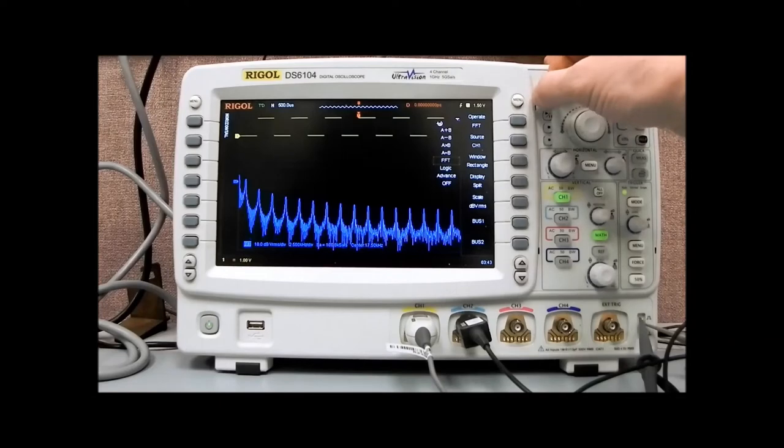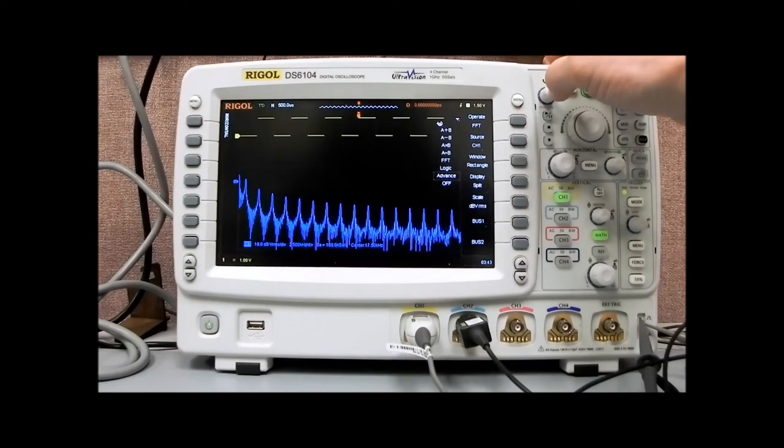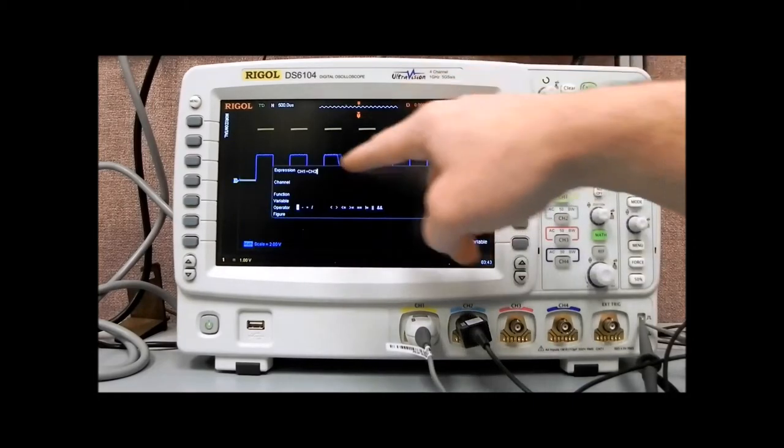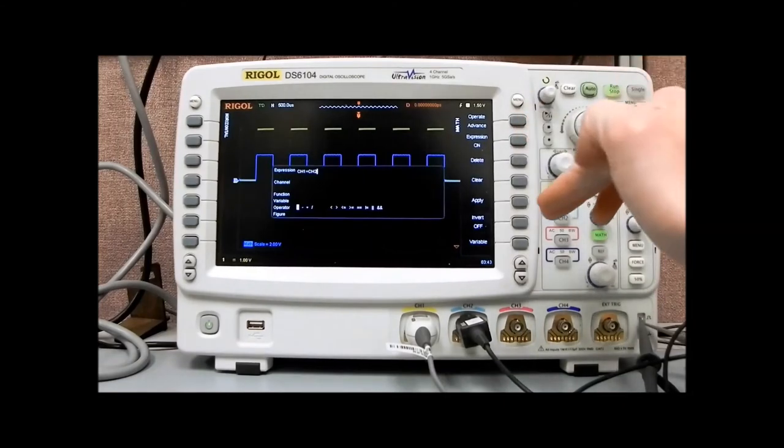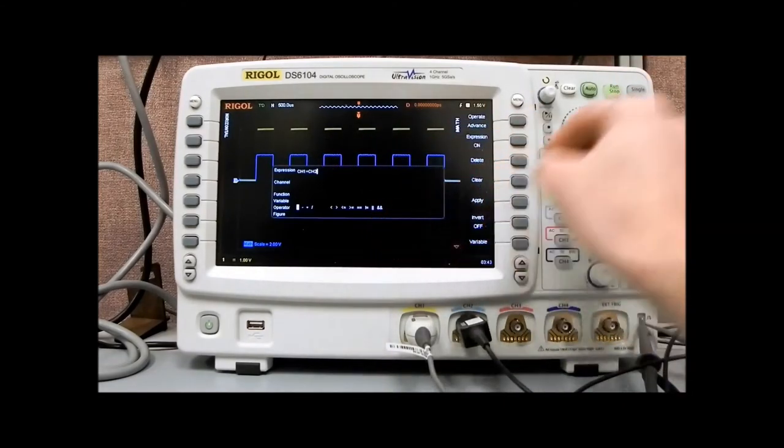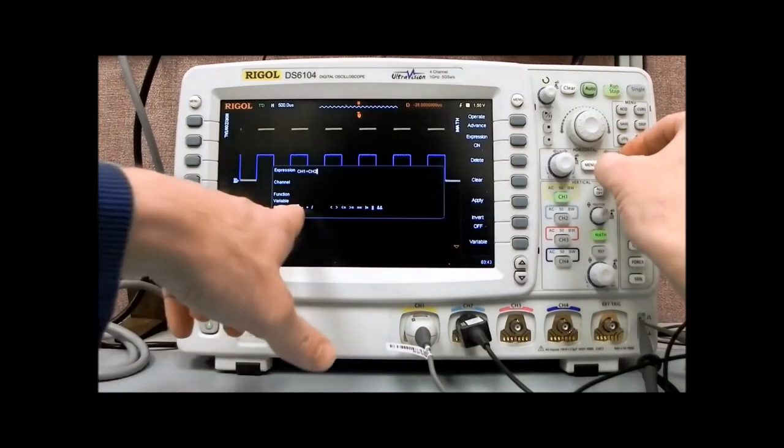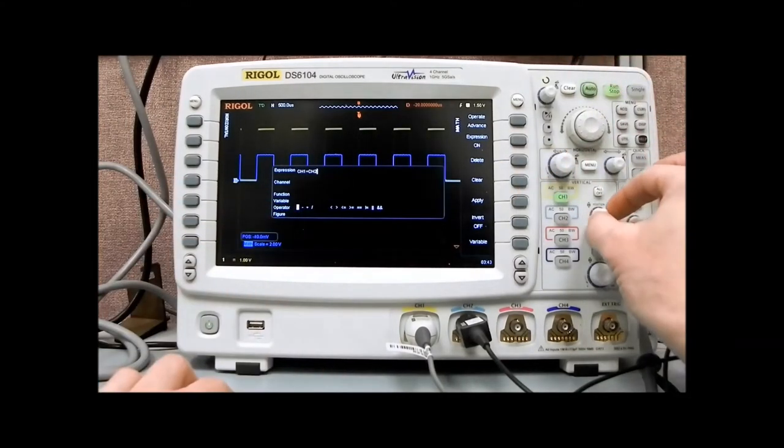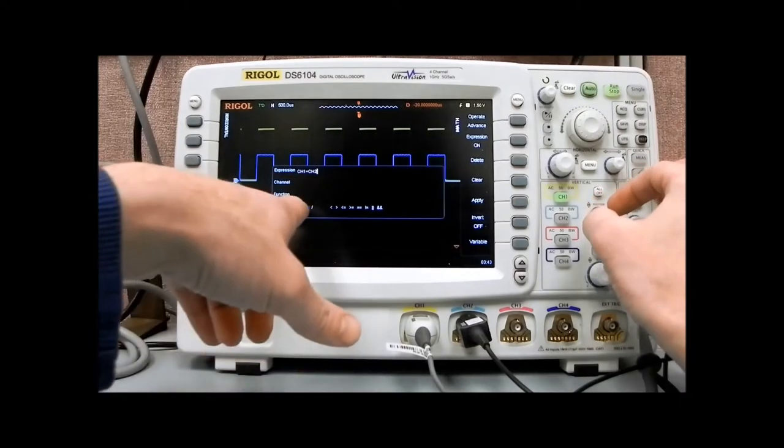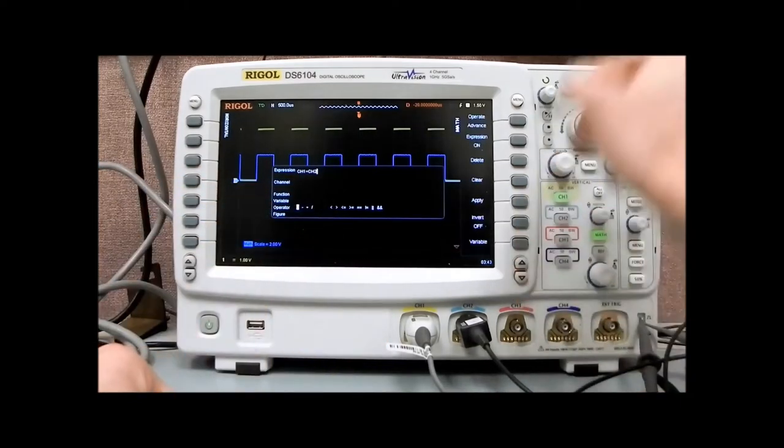Now I'm going to cover some of the others. Let's go to advanced because I think that's where the processing power really shows with the DS6000. If we pull up advanced, we get an expression that we can create. It's not just A plus B and A minus B. You can select channels and also select the actual operators that we're going to be using.